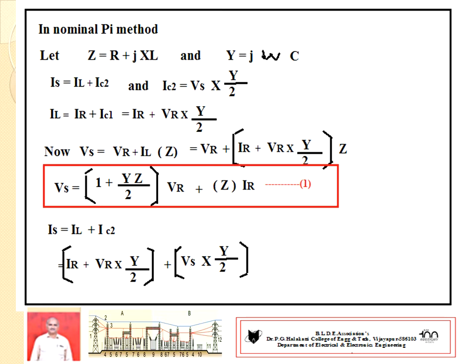Let total impedance Z equal R plus j·XL, where R is total resistance of the line per phase and XL is total inductive reactance per phase. Capacitive susceptance Y equals j·omega·C, where C is the capacitance value and omega equals 2·pi·f. Sending end current IS equals IL plus IC2, where IC2 equals VS times Y/2. Line current IL equals IR plus IC1, and IC1 equals VR times Y/2. Once the line current is known, sending end voltage VS equals VR plus impedance drop IL times Z.